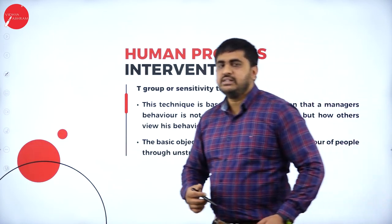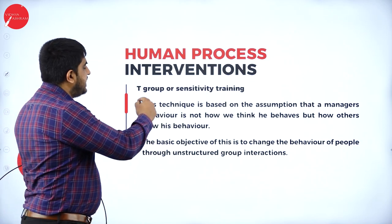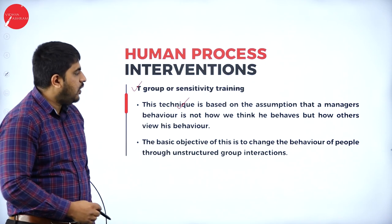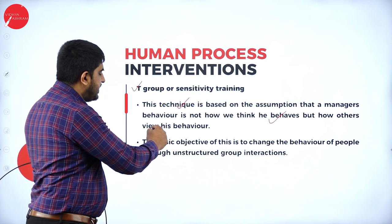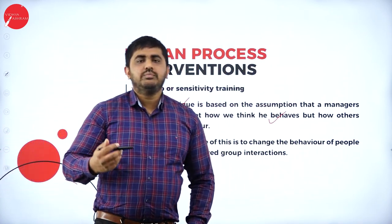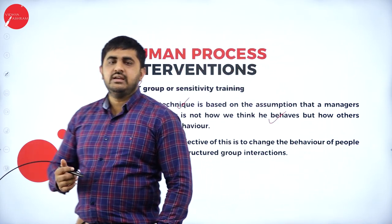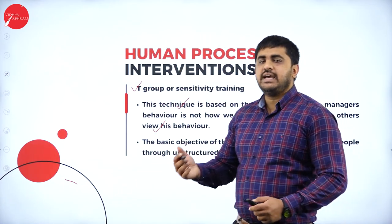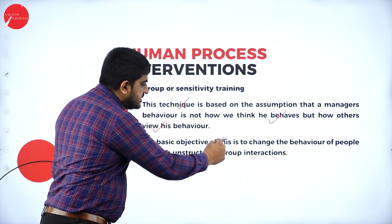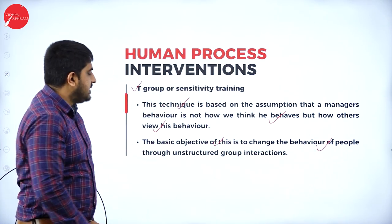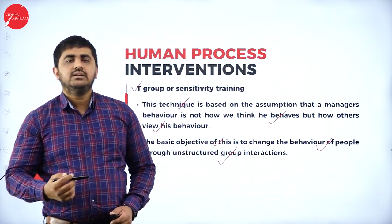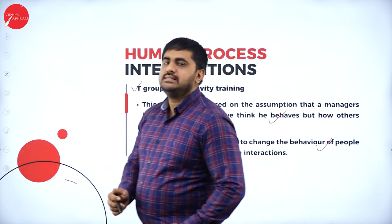In human process intervention, the first technique is T-group or sensitivity training. This technique is based on the assumption that a manager's behavior is not how we think he behaves, but how others view his behavior. The manager cannot restrict himself to a certain style of behaving — he has to behave in a standard way according to organizational goals. The basic objective is to change the behavior of people through unstructured group interactions. The manager will not change his attitude or behavior; the perception of the employees has to be changed. That is the meaning of T-group or sensitivity training.